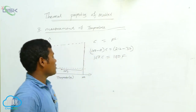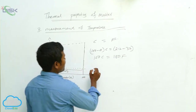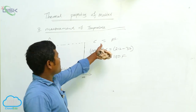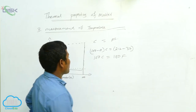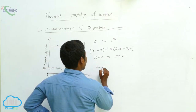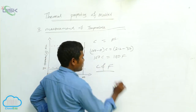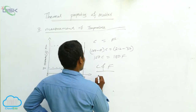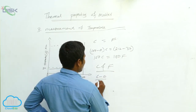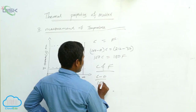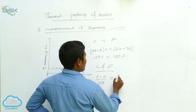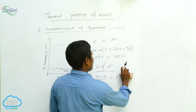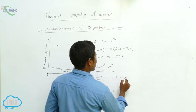Then we can write: Celsius range is 100 minus 0, which equals 100. For Fahrenheit, the range is 212 minus 32, which equals 180. So 100°C corresponds to 180°F difference.